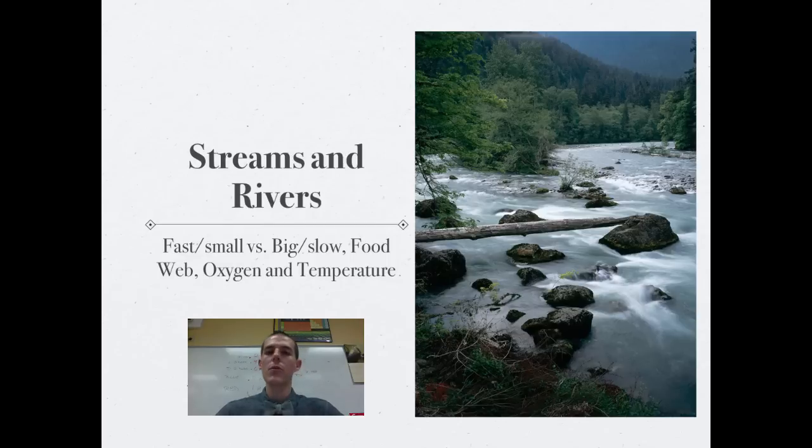As you flow downstream into the river where things slow down, you can start to get plants that are rooted in the water, you can get algae, and those things are going to form the base of your food web.